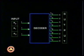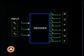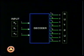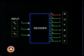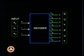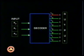A decoder accepts a binary word as input. Depending on the input word, only one of its output lines would be active. In the example shown, the input word is three, and consequently only output number three is active.